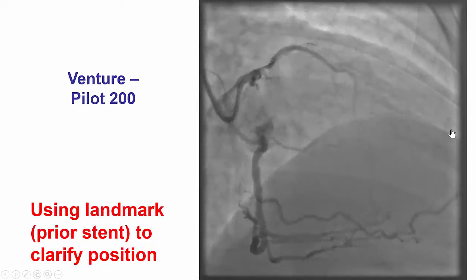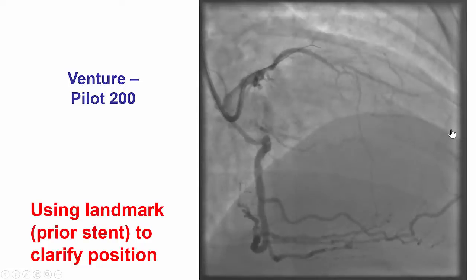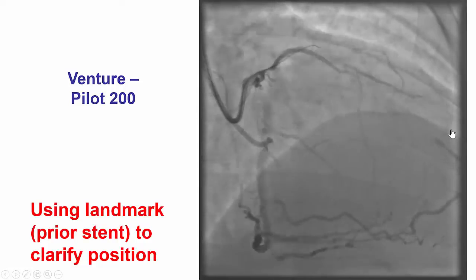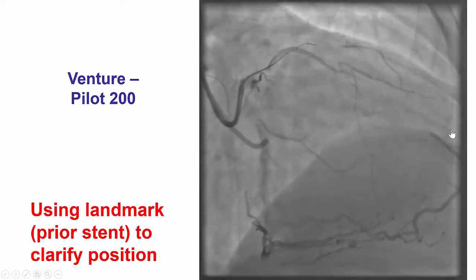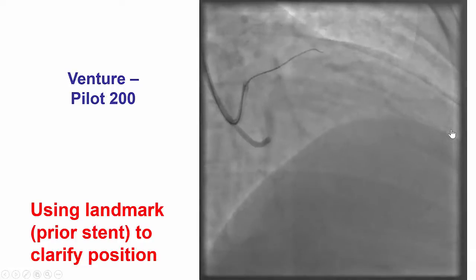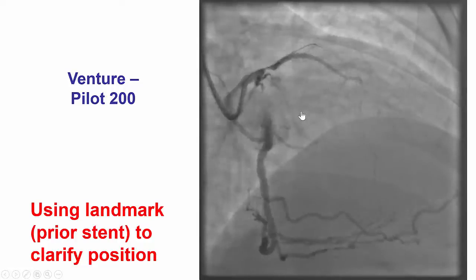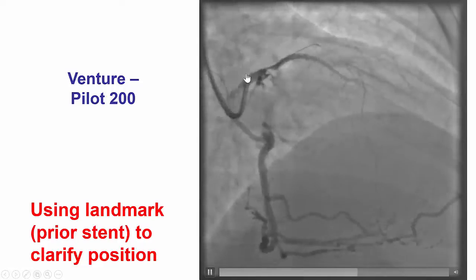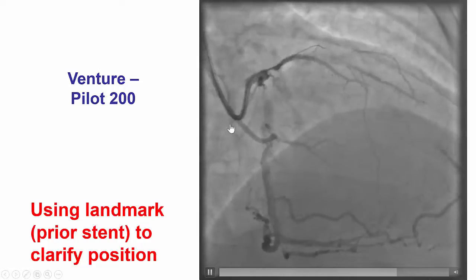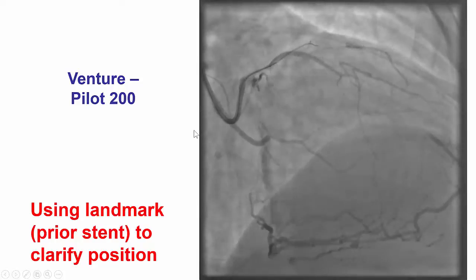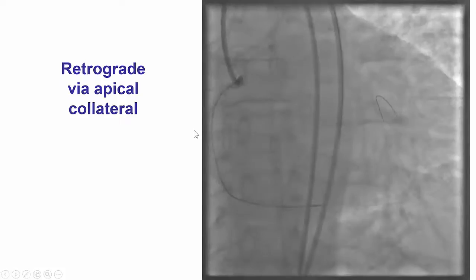Several attempts were made antegrade to cross using the previous stent as a marker; however, the wire was clearly outside the previous stent. Therefore, we quickly changed to a retrograde approach.